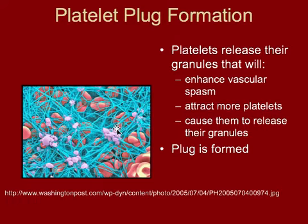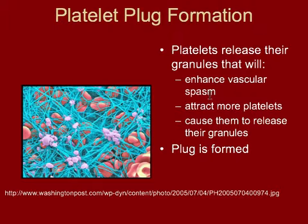When the platelets get there, they form a platelet plug, but they also release their granules — remember that they have granules because they come from the megakaryocyte. The granules do a bunch of different things: they increase the vascular spasm, cause the smooth muscle to contract more, attract more platelets, and make those platelets also release their granules.